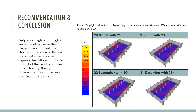To conclude, adjustable light shelf angles would be effective, as illumination varies with changes in the position of the sun and cloud cover, in order to improve the uniform distribution of light at the reading spaces of a university library at different seasons of the year and times of the day. We hope this research will lead to further research on adjustable light shelves, daylighting in libraries, and other occupancy types. Thank you for your attention. Please feel free to contact us at zanatul.ferdos.arc@aust.edu if you have any queries.